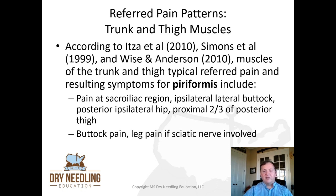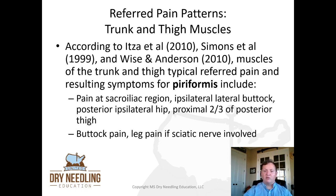Specifically referring to piriformis: pain at the sacroiliac region, ipsilateral lateral buttock, posterior ipsilateral hip, proximal two-thirds of the posterior thigh, and buttock pain. You can also get the nerve-type pain — leg pain — if the sciatic nerve happens to be involved with the piriformis. In some cadaver studies, they found the sciatic nerve piercing through the piriformis, so sciatic nerve-type pain can also be involved with piriformis.